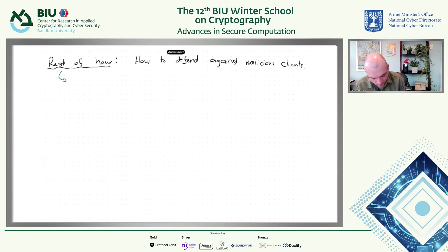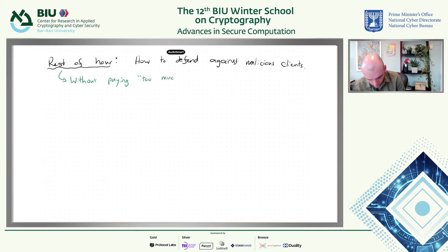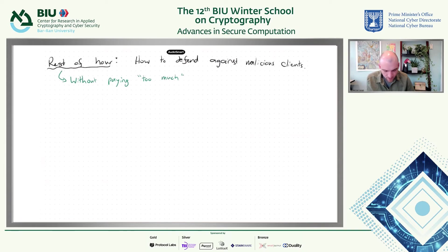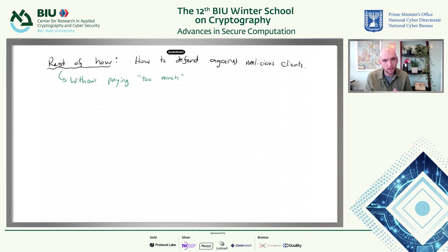The real goal is to do this without paying too much, because if you've learned about secure multi-party computation or zero knowledge proofs, it turns out that if you don't care about efficiency you can do basically anything. But if you actually want to deploy these systems at scale, you have to care a lot about concrete efficiency. The tools I'll talk about today are all about defending against malicious clients without paying too much for it.